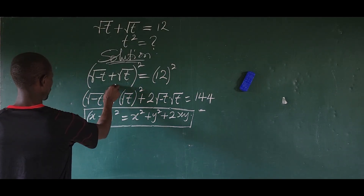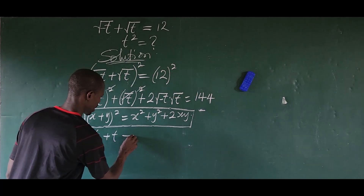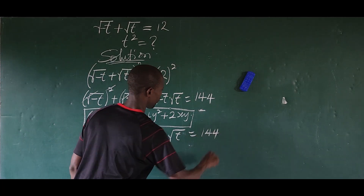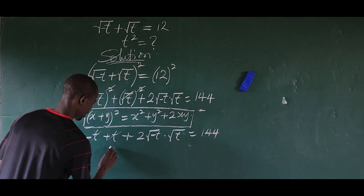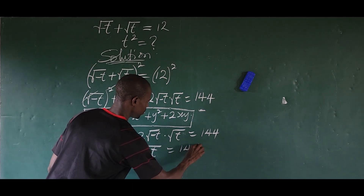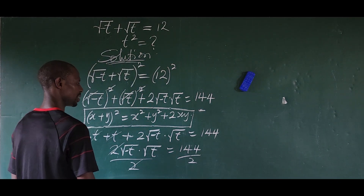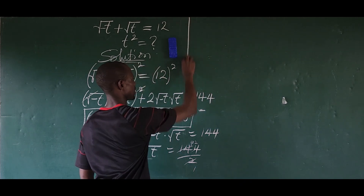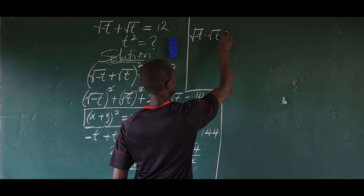So from here we now have minus t plus t plus 2 times the square root of minus t times the square root of t, equal to 144. The minus t and the plus t cancel each other out and leave the system. So we now have 2 times the square root of minus t times the square root of t equal to 144. We divide both sides by 2, giving us the square root of minus t times the square root of t equal to 72.